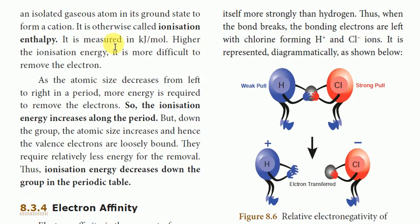It is measured in kilojoule per mole. Higher ionization energy means it is more difficult to remove the electron.